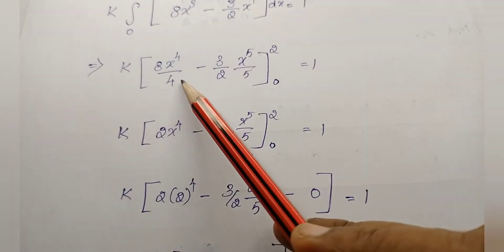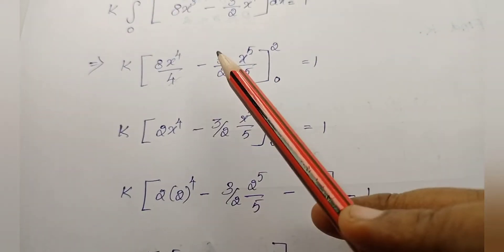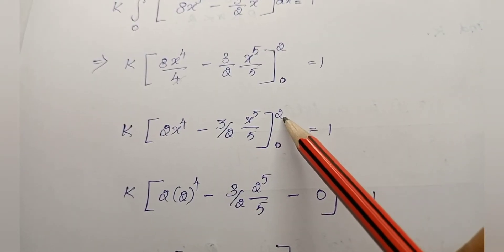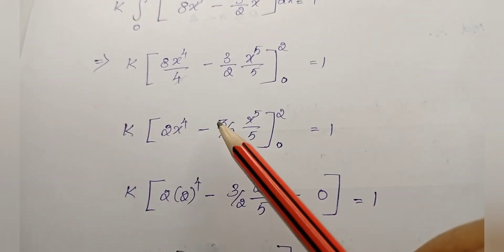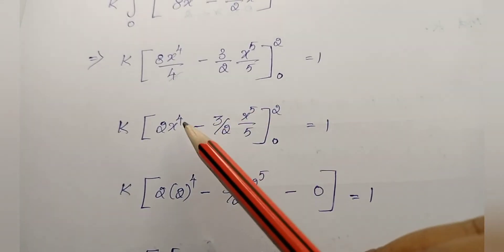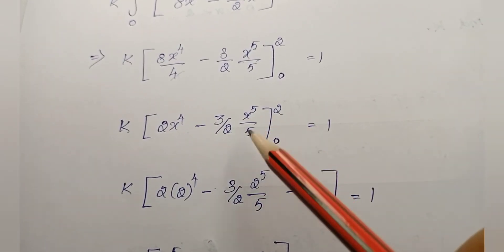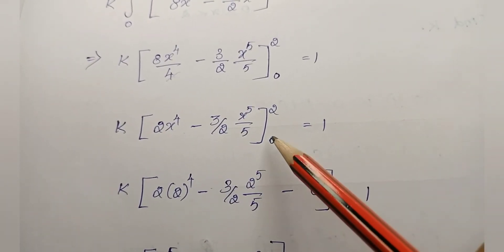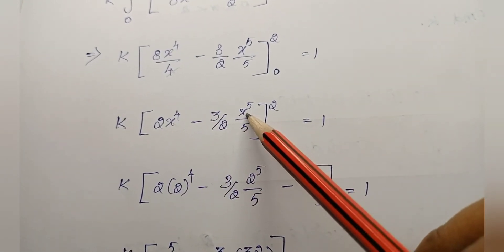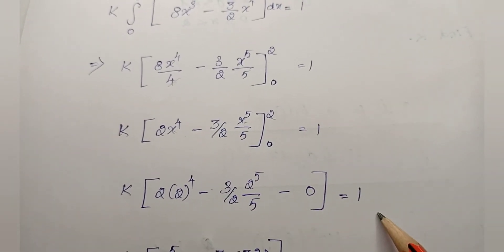Expanding and integrating with respect to x over 0 to 2: we get 2x to the power 4 minus (3/2) times x to the power 5 divided by 5, evaluated from 0 to 2. Substituting the upper limit (x = 2) and lower limit (x = 0): the lower limit gives 0, so we have k times (2 times 2⁴ minus (3/2) times 2⁵/5) equals 1.